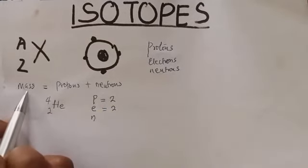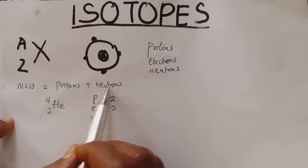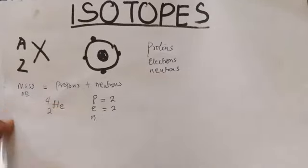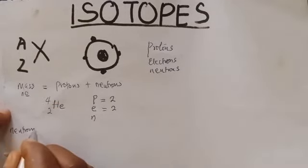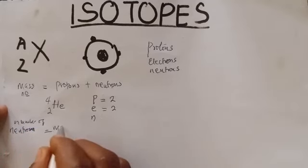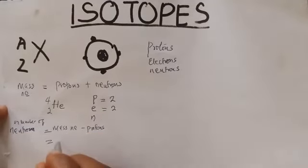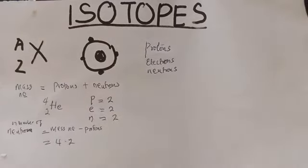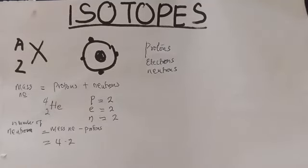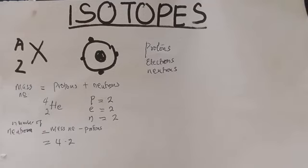Now the number of neutrons: remember the mass number equals the number of protons plus the number of neutrons. Since we know the atomic number — which gives the number of protons — and we have the mass number, we can calculate neutrons by subtracting protons from the mass number. Number of neutrons = 4 minus 2 = 2. So in this helium atom we have two protons, two electrons, and two neutrons, giving a mass of 2 + 2 = 4.